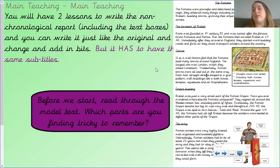Our first paragraph is The Invasion of Britain, and it starts with an underlined subtitle. Rome was founded in 8th century BC and was named after the famous twins Romulus and Remus. But the Romans then invaded Britain in 43 AD. Immediately after they arrived in England, they started work building rows and forts so they could transport soldiers around the country.